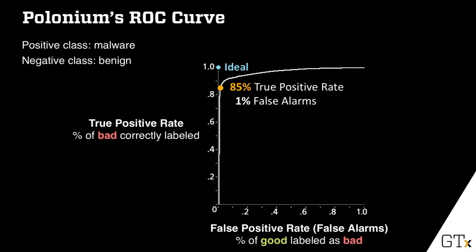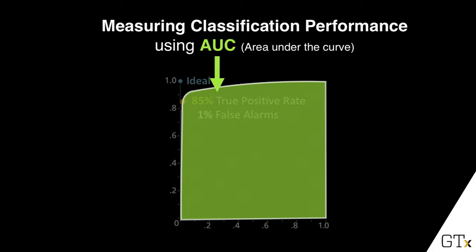The ideal scenario for any classification problem on an ROC curve is to hit the top left corner — meaning no false alarm and all positive things correctly classified. So the more the curve looks like a right angle, the better. In this example, it's quite close to a right angle, but not quite. The ROC curve gives you a series of numbers — at any point you can see the trade-off between false alarm and true positive rate. If you only want one number to summarize the whole ROC curve, a very common approach is to use AUC, or area under the curve.